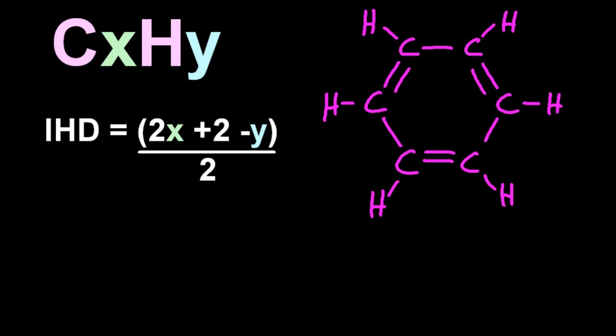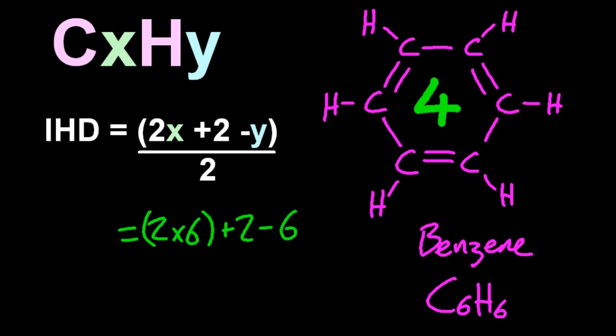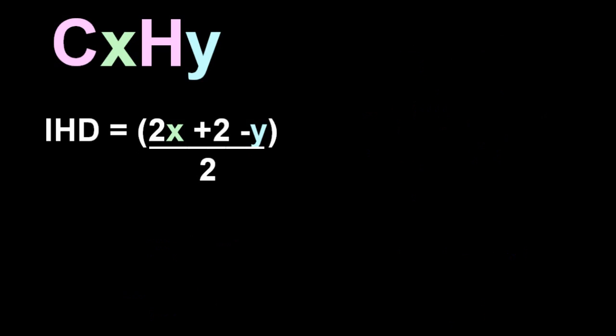So looking at benzene as our example. C6H6. Now it should have four because it's got a ring and three carbon carbon double bonds. Let's see if that equation also gives us four. Yeah so that seems to work. Now if in doubt trust the equation. We'll see a little trick right at the end.